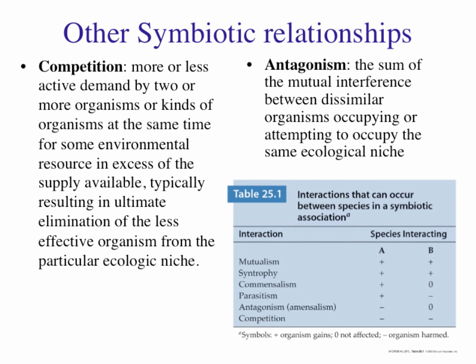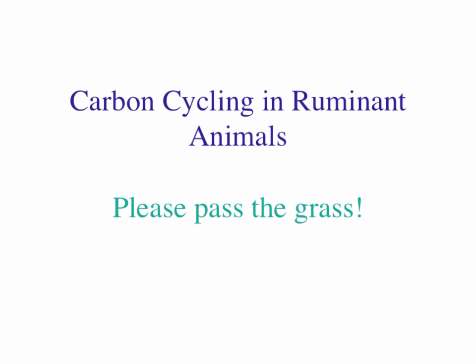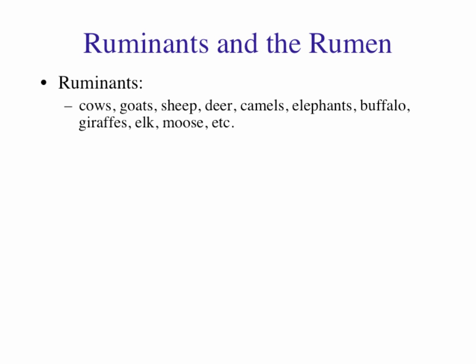Now I want to look at carbon cycling in ruminants. Ruminants include cows, goats, sheep, deer, camels, elephants, buffalo, giraffes, elk, moose, etc. They all have the rumen, a distinct organ in their digestive system. The rumen is a foregut organ at the beginning of the digestive system, whereas the cecum is a hindgut organ at the end. Rabbits and horses have a cecum. Rabbits eat their own droppings to recycle material from the hindgut back into the system.